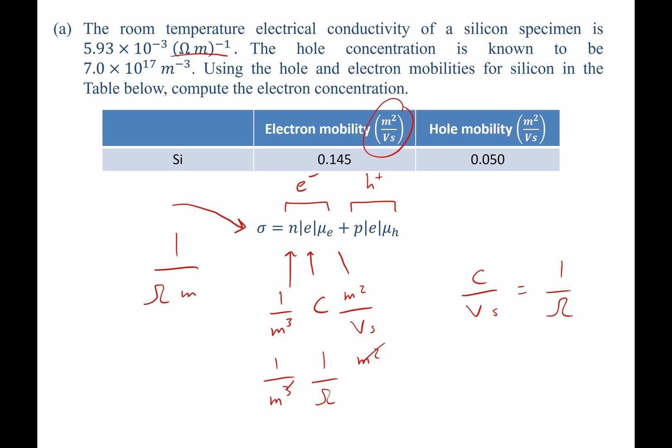Meters squared will cancel, that will cancel, and sure enough, each one of these terms, both the component coming from electrons as well as holes, has the correct units of 1 over ohmmeters.